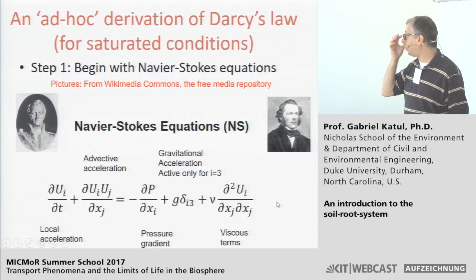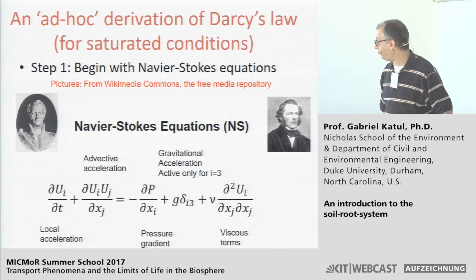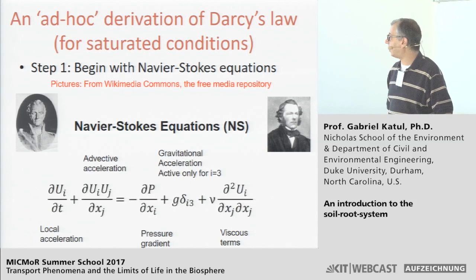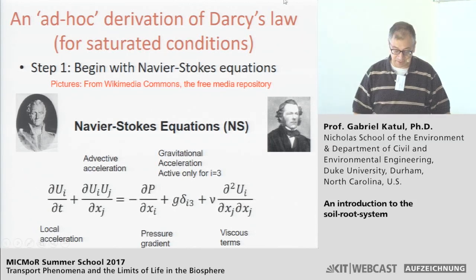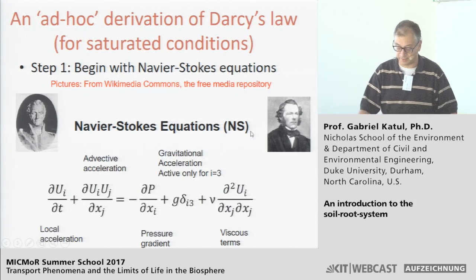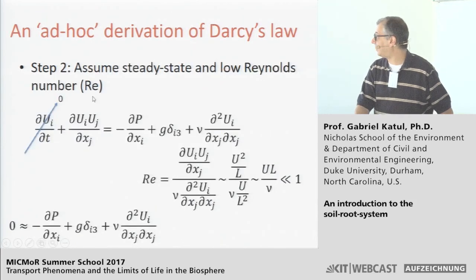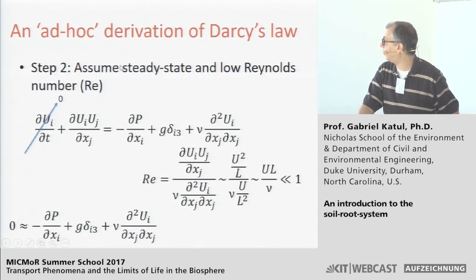Now, what makes Darcy's law different from Fourier's or Fick's law? A good starting point is the Navier-Stokes equations: the local rate of change, the advective rate of change, the pressure gradient, the gravitational term, and the viscous term. To connect with Darcy's law, first assume steady flow — removing the local rate of change term. Then assume low Reynolds number: the ratio of the inertial term to the viscous term scales as UL/ν, the Reynolds number. If this is much less than one, the inertial term is negligible.